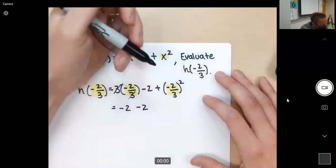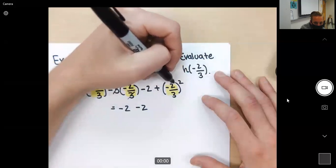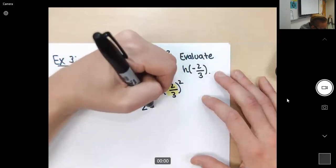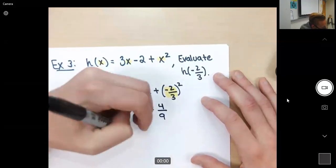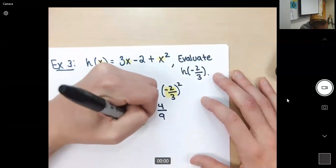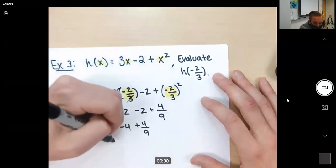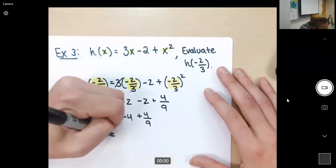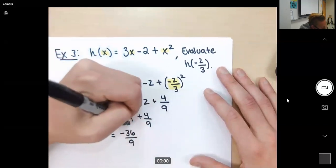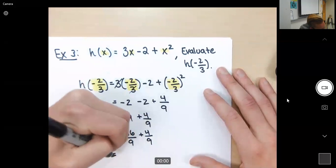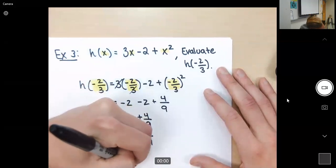And then negative 2 thirds squared. This is pretty simple. Negative squared is going to be positive. 2 squared will be 4, 3 squared will be 9. So negative 2 minus 2 is negative 4 plus 4 over 9. We will convert negative 4 to a fraction to be negative 36 over 9 plus 4 over 9, and that gets us negative 32 over 9.